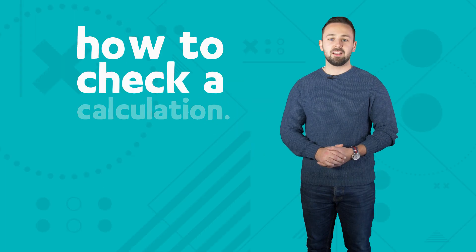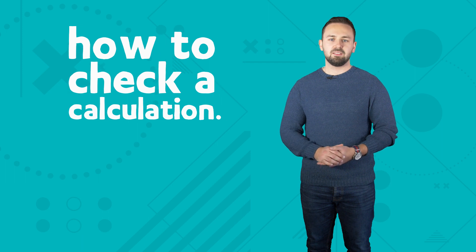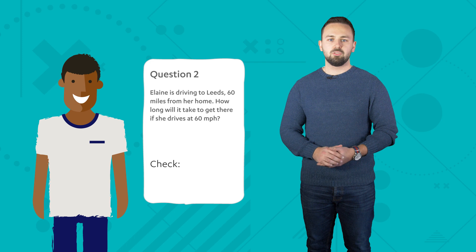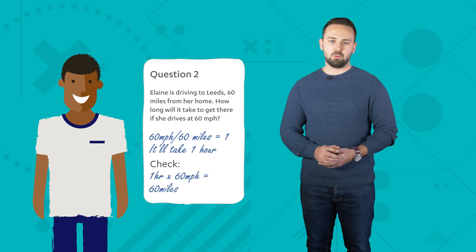Error seven: how to check a calculation. Learners either completed this type of question correctly or simply didn't answer the question at all. Students should always look to answer all questions within the paper.